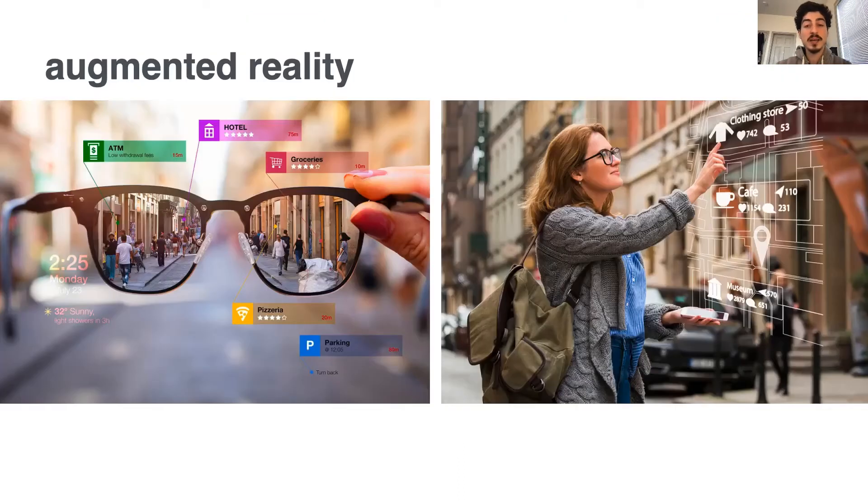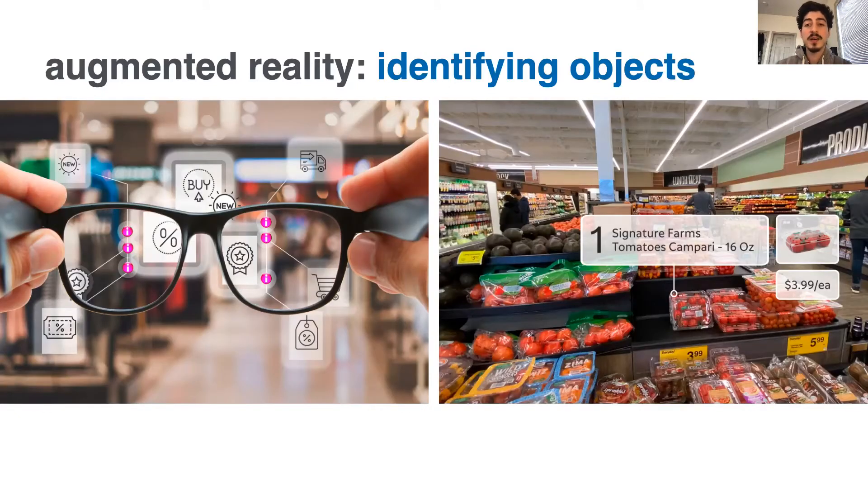With augmented reality getting more popular, wearable devices promise to enrich our daily interactions by providing information to us whenever we need it. These devices need to constantly identify what is around us and display related digital content. Imagine you're at a store browsing different items. You'd like to get further information about the products you're considering, the unit price, recipes, calorie information, or cheaper alternatives.